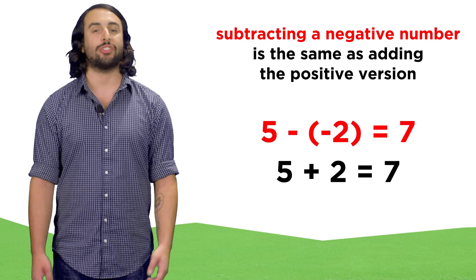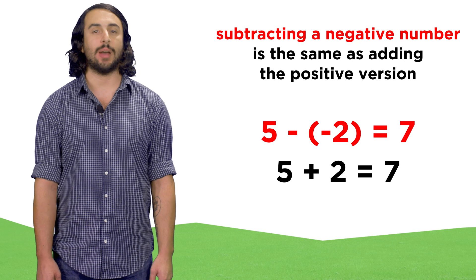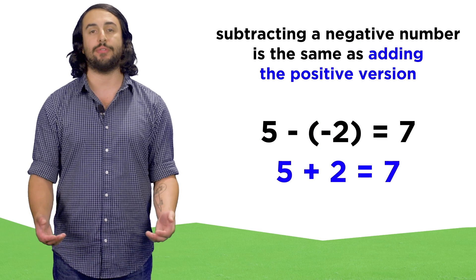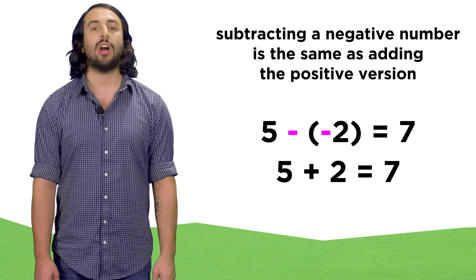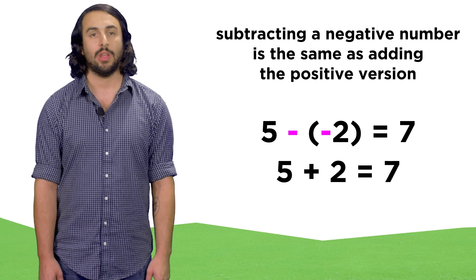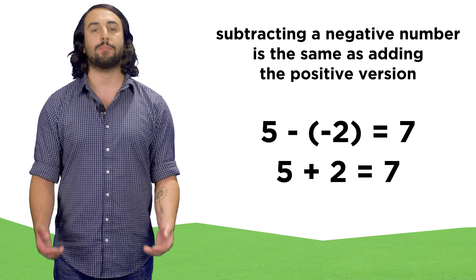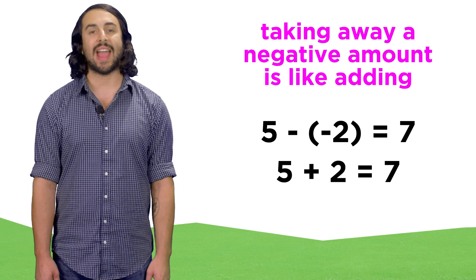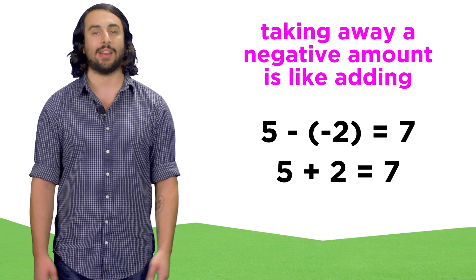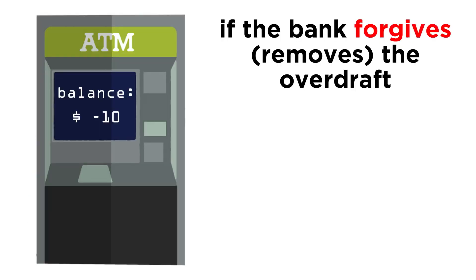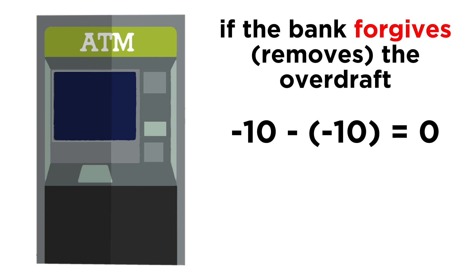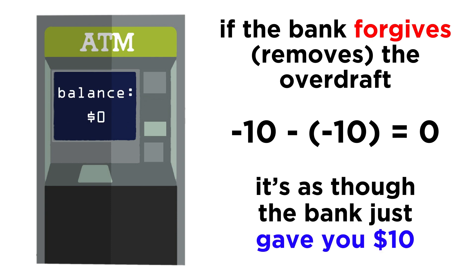If we are doing subtraction, subtracting a negative number is the same as adding the positive version of that number, because the minus signs cancel each other out. This cancellation isn't magic — it actually makes perfect sense, because taking away a negative amount is like adding. If your bank account is overdrawn by ten dollars and the bank were to forgive or subtract that overdraft, you'd suddenly be at zero.